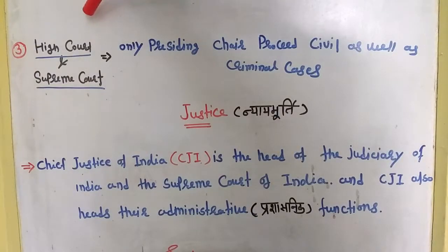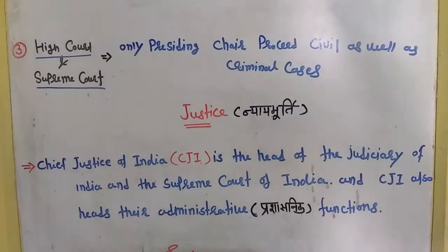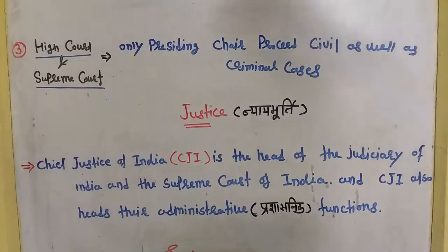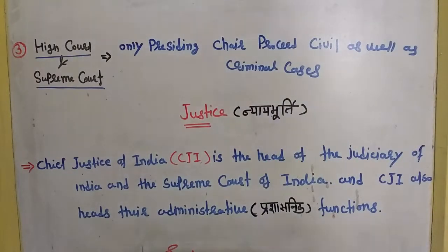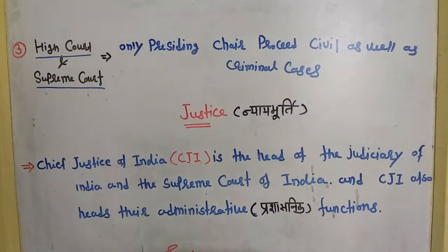At the next level, the High Court and Supreme Court, there is only one presiding chair that handles both civil as well as criminal cases. The presiding officer here is called a justice — in Hindi, 'Nyaya Murti'. The Chief Justice of India, that is CJI, is the head of the Judiciary System of India and the Supreme Court of India. The CJI also oversees administrative functions of the Indian judiciary.